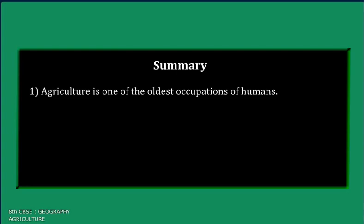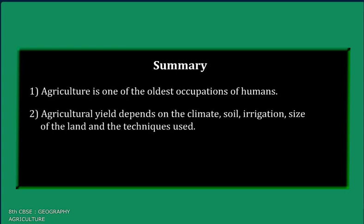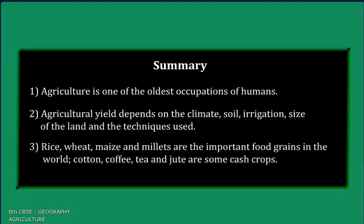Agriculture is one of the oldest occupations of humans. Agriculture yield depends on the climate, soil, irrigation, size of land, and the techniques used. Rice, wheat, maize, and millets are the important food grains in the world. Cotton, coffee, tea, and jute are some important cash crops.